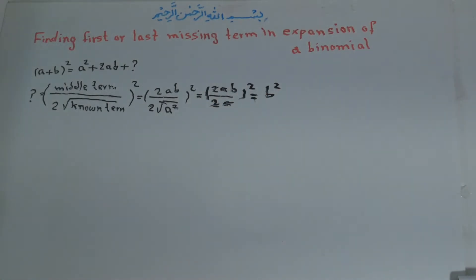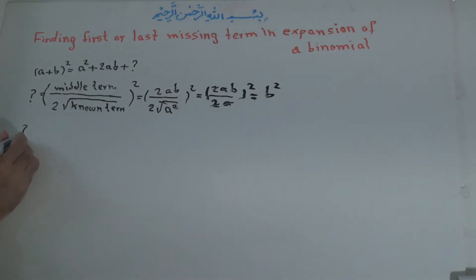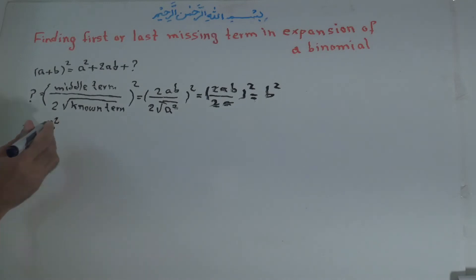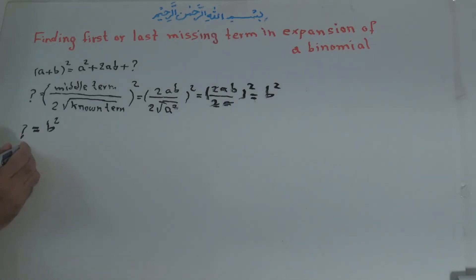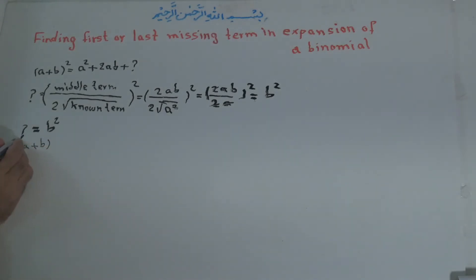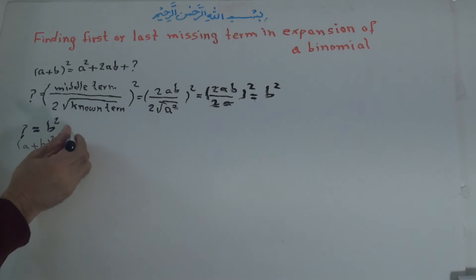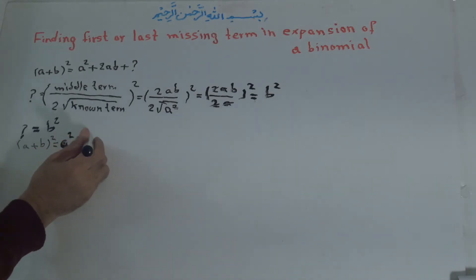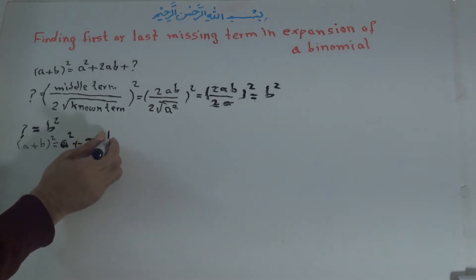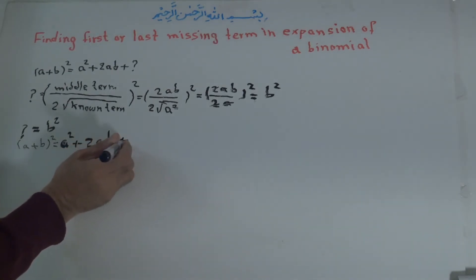It means that the question mark, or the unknown term, is equal to b to the power of 2. So a plus b to the power of 2 is equal to a squared plus 2ab plus b squared.